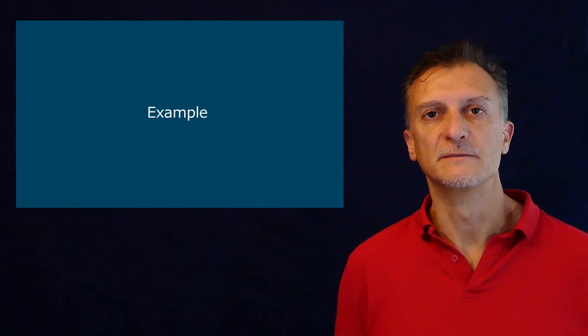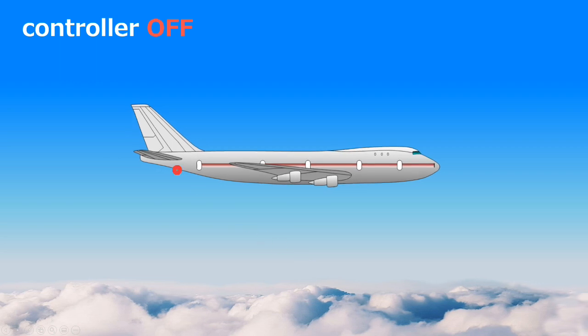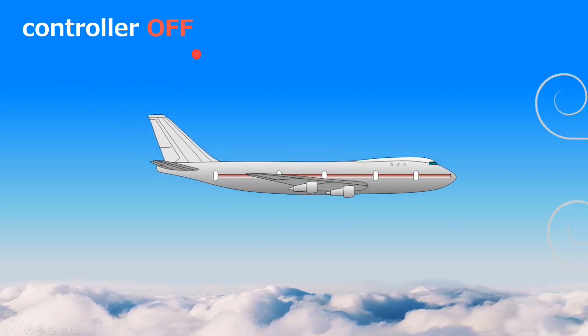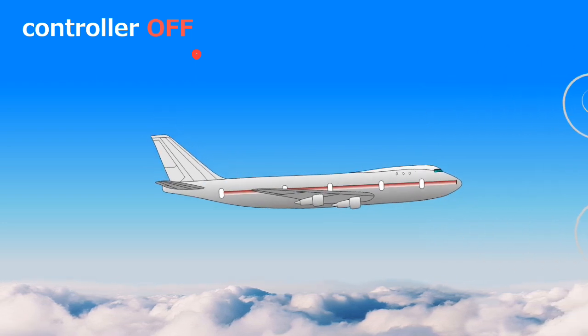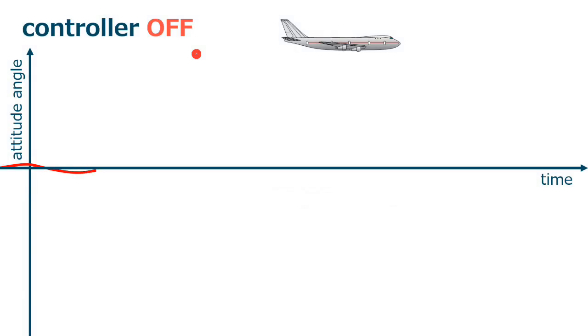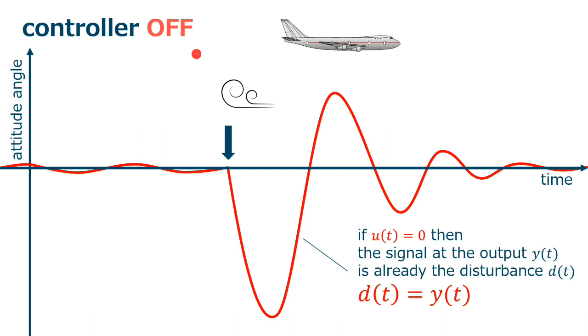Let us see an example. So, let us take again the airplane example with the controller off. The airplane in open loop senses the effect of the disturbance and we can register it. Because UT is zero, then the signal at the output Y is already the disturbance T that we need.